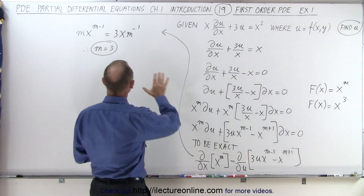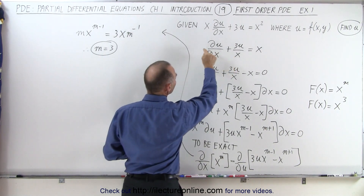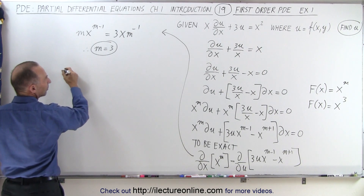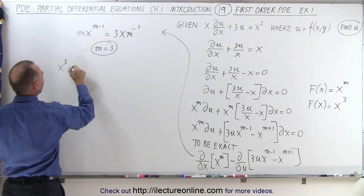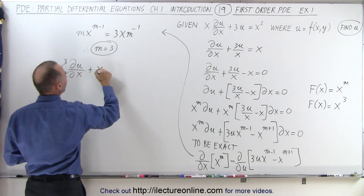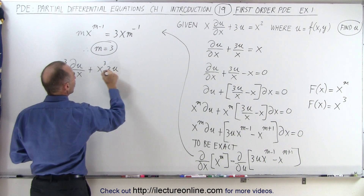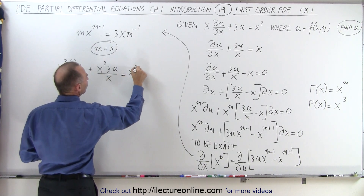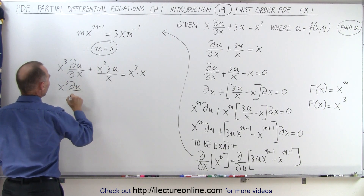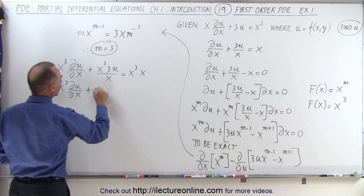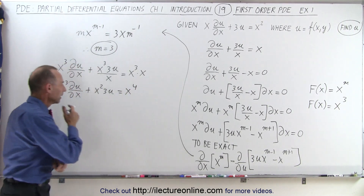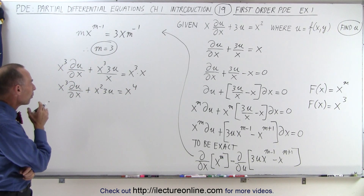Now that I have the integrating factor, I'm going to multiply both sides of this equation by x cubed. So we end up with x cubed times the partial of u with respect to x, plus x cubed times 3u over x, equal to x cubed times x. Simplifying, that gives us x cubed times the partial of u with respect to x, plus 3u·x squared, equal to x to the fourth.